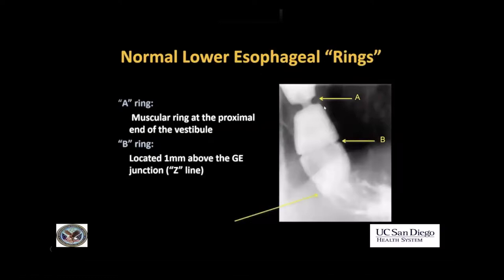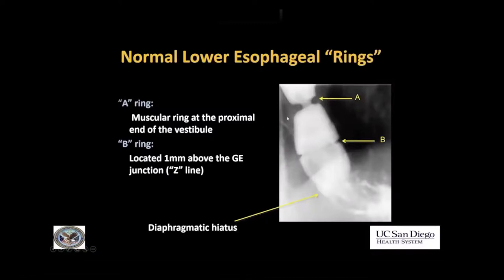Let's look at the lower esophagus. There are two normal muscular rings in the lower esophagus. The first one is the A-ring, which you often don't see — you only see it when the esophagus is very well extended. So this is unusual to see it quite as well as this, but this is where it is; it's a normal anatomical structure. The space in between the A and the B-ring is called the vestibule. The B-ring is located right at the GE junction, just a millimeter above the histological GE junction, which is called the Z-line.